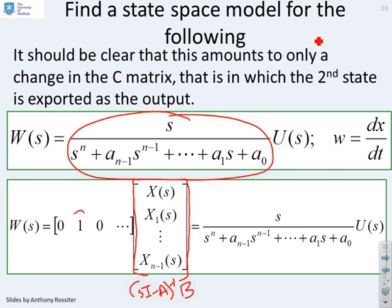And then if I just want the s term, that corresponds to the second row. And therefore, the c matrix has a 1 in the second position and 0 elsewhere, and that will give me the result I expect. So in order to get an s in the numerator, I put a 1 in the second position of the c matrix. So this is going to be my c matrix.